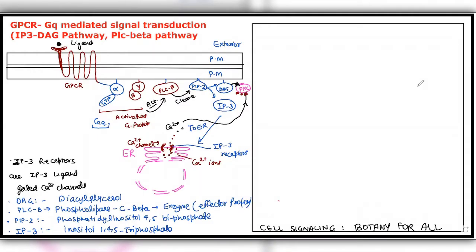Hello everyone, I welcome you all at the YouTube channel Botany for All. In the series of our cell signaling, this is the sixth part. In the previous parts I have discussed the introduction, the ligand, the receptors, as well as the GPCR — the G protein coupled receptor. In previous videos we have discussed the GPCR in detail, and one pathway — the cAMP cyclic AMP pathway — was also discussed in part 5. So GPCR ka hi next pathway: through GPCR various kinds of ligands trigger it.